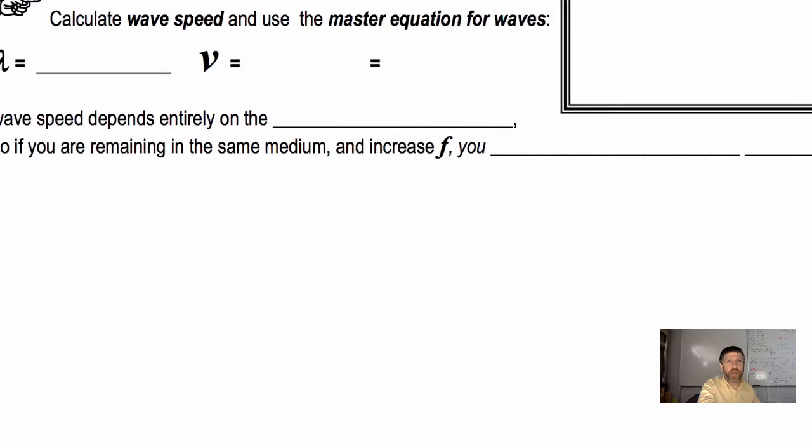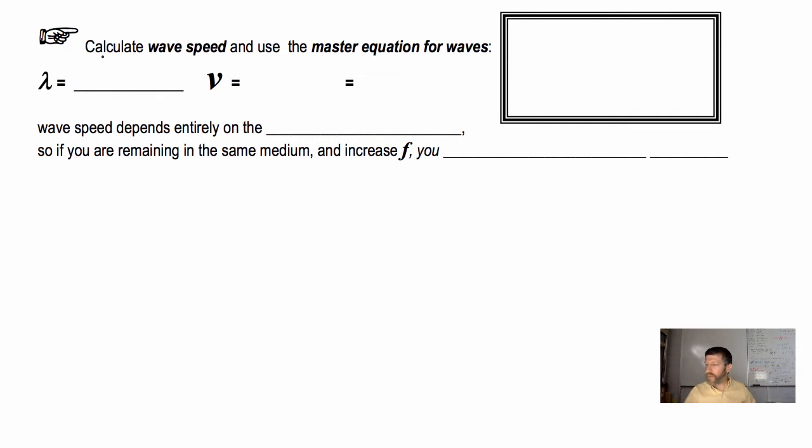Seven point five centimeters is our exact wavelength for that wave. So we're going to go back to this and we're going to fill in and lambda is seven point five centimeters. Now with the information we already have, we can actually believe it or not, figure out what the wave speed of that wave was.